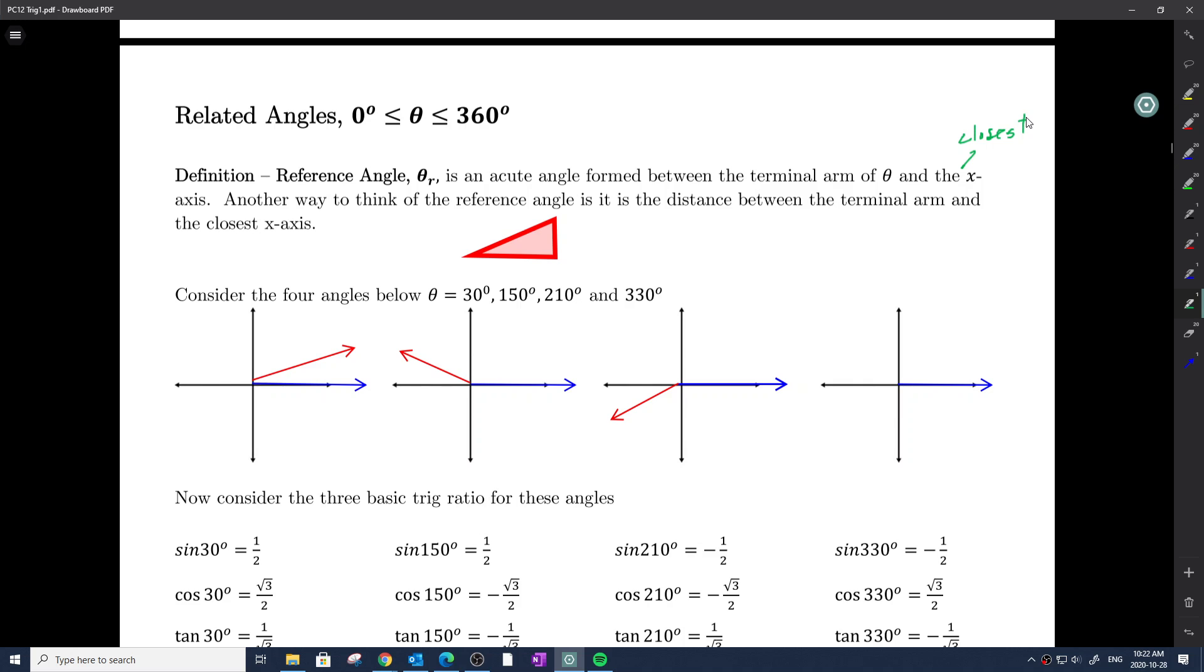Let us consider four angles: 30, 150, 210, and 310 degrees. I'm just going to draw out 30 degrees here. How far is 30 degrees away from the x-axis? Well, 30 degrees from the closest x-axis is really 30 degrees. This would be known as my reference angle.